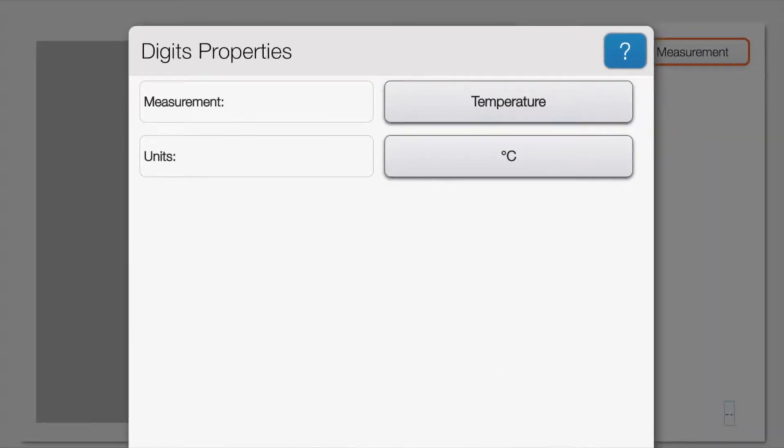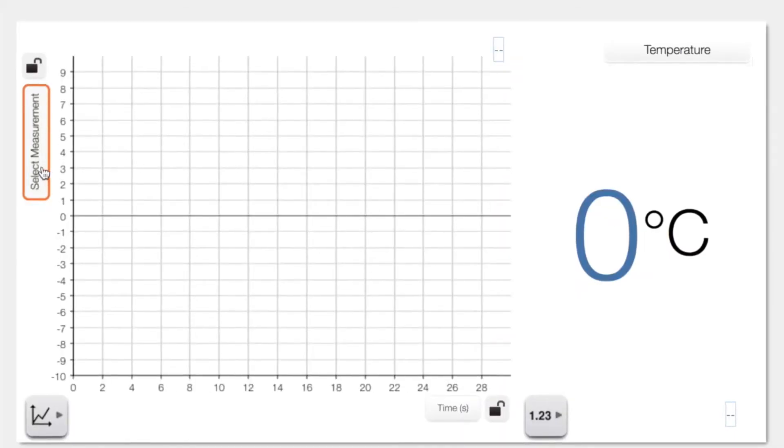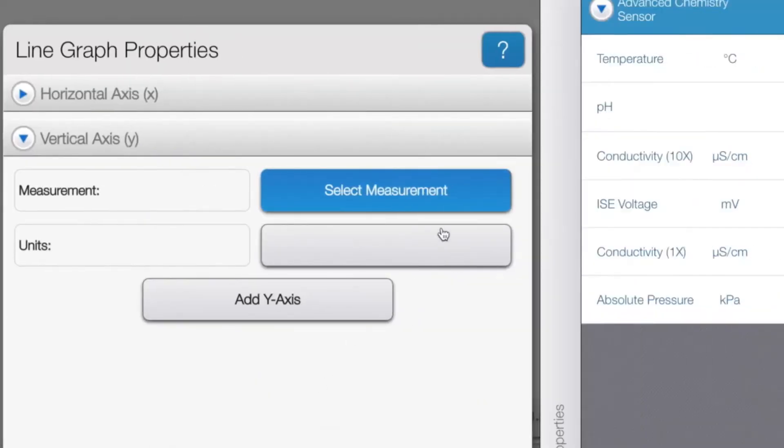In the larger gray box you're going to use the graph function and you'll select pressure in kilopascals as your unit on the y-axis. Time will be the unit on the x-axis.